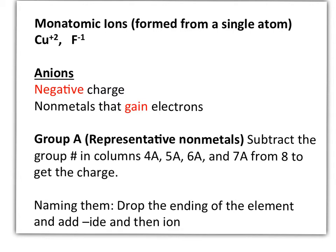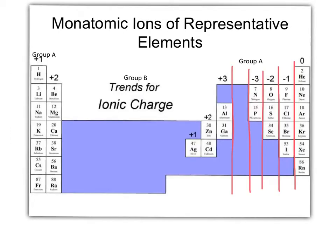And then to name them, we're going to just drop the ending of the element and add the suffix -ide, and then ion. Representative nonmetals are found in groups 4A, 5A, 6A, 7A, and 8A. If we focus on column 6 and we take the number next to the letter A, we subtract 8. That will give us the charge for any element in that group. This is a minus 2. Notice that there is no charge for the noble gases. The noble gases are stable, and they will never carry a charge. The last thing I want to point out is column 4A. We generally do not work with the elements in this column because they can have the option of being plus 4 or minus 4 in terms of charge.